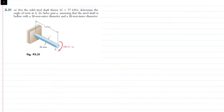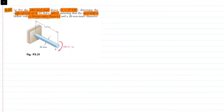Welcome back. Problem 3.31: in part A, given a solid steel shaft with modulus of rigidity G = 77 GPa, determine the angle of twist at A. In part B, solve part A assuming the steel shaft is hollow with a 30 mm outer diameter and 20 mm inner diameter. From figure 3.31, the solid shaft has a diameter of 30 mm, a length of 1.8 m, and a torque of 250 N·m applied at point A.